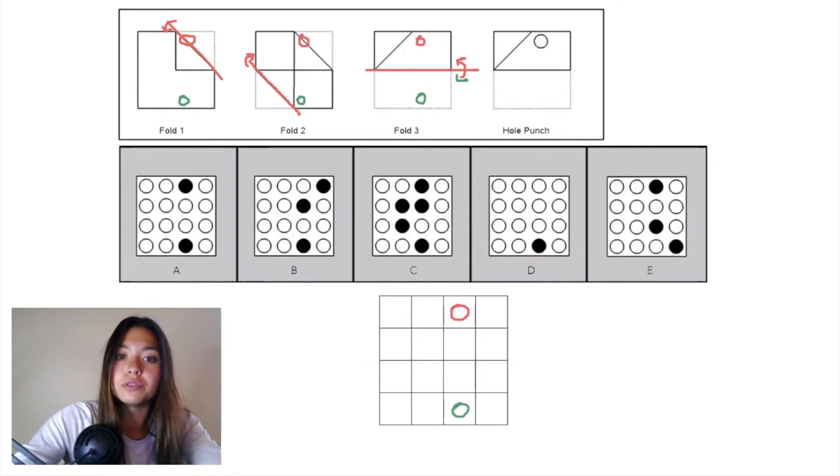Now we'll undo fold two. When we undo fold two, the piece of paper that was folded up is this triangle right there in light blue.